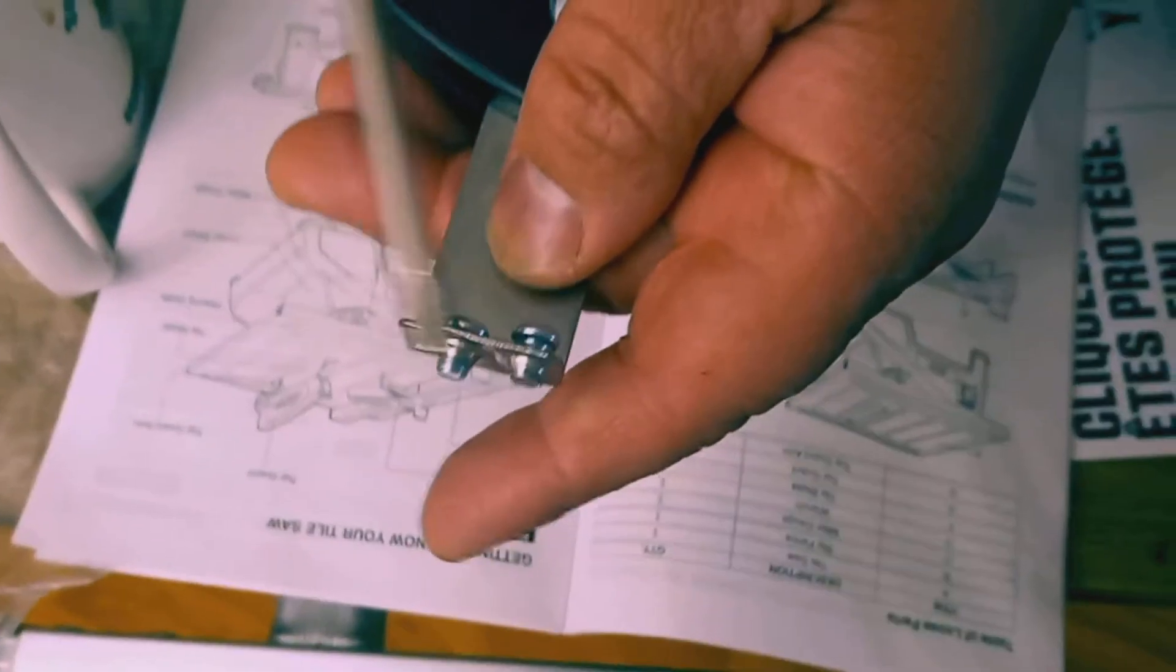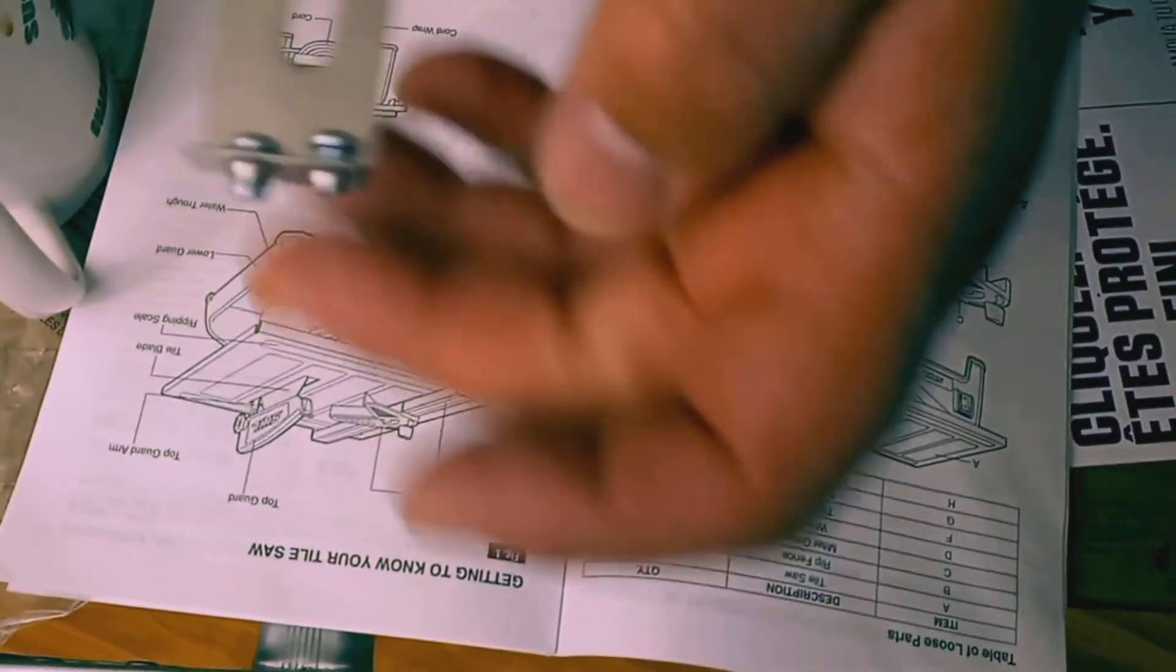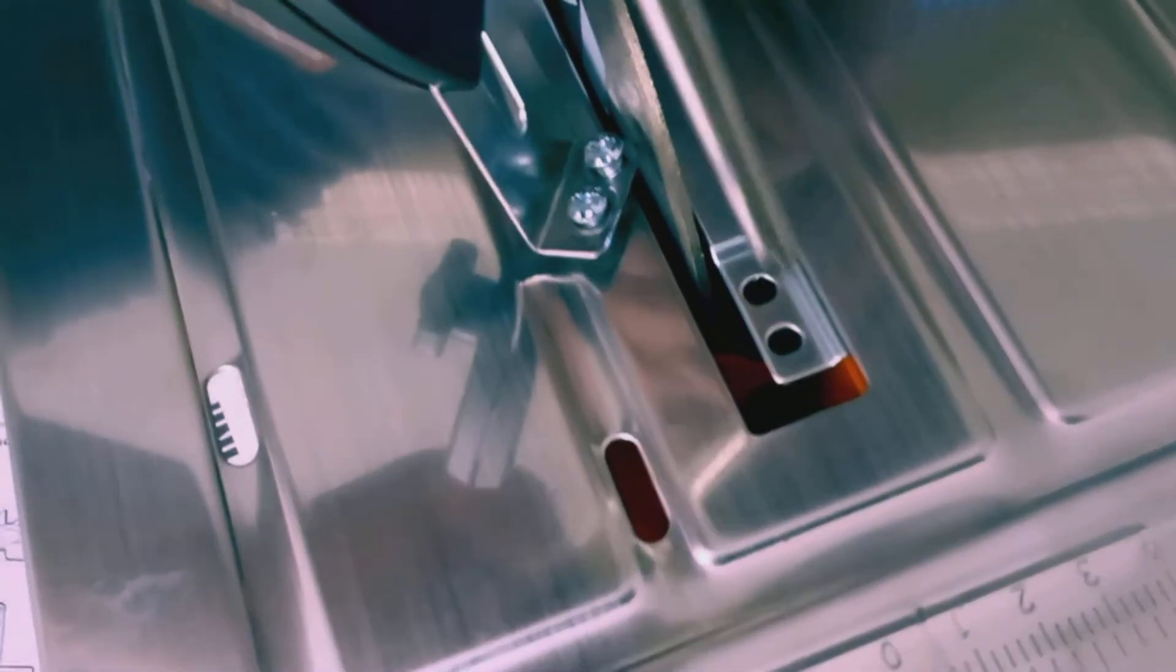Alright guys so these two screws on the top guard, they got to come all the way out because what you're gonna do is you're gonna slide the top guard underneath this piece with the hole. And then you're gonna put your screws on top of these so this would be sitting underneath. And then you'll be able to tighten it to stay in place and then you should be able to open and close your guard or even lower it and raise it over the blade.